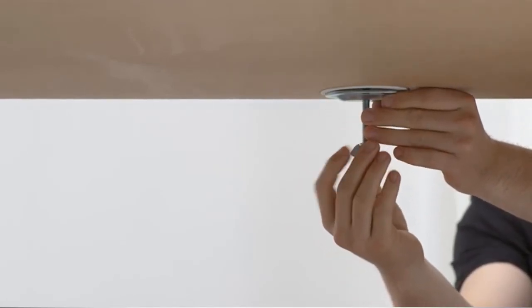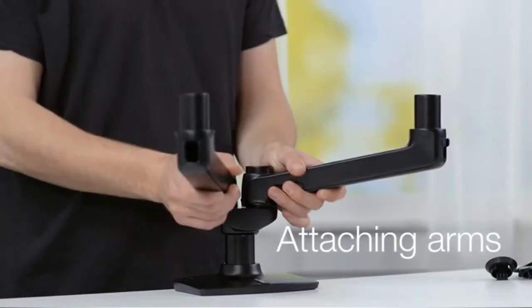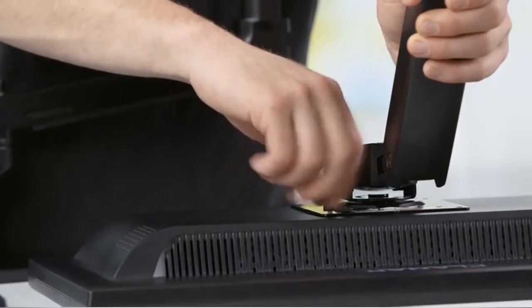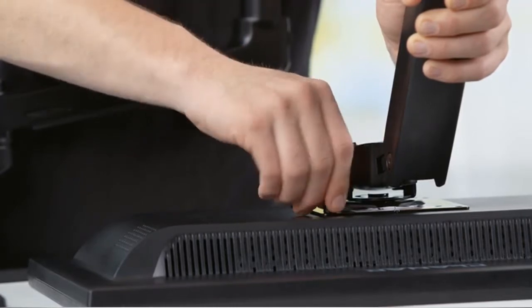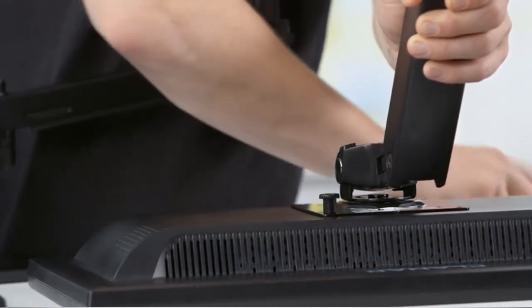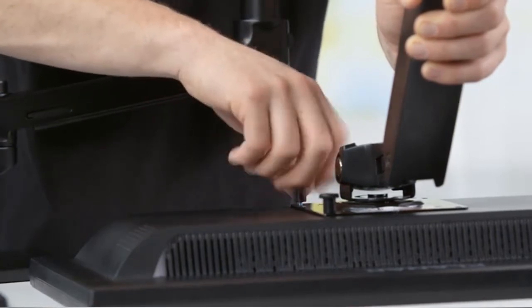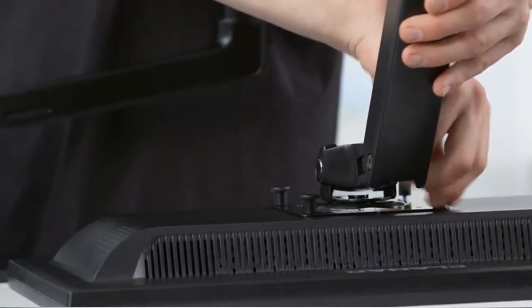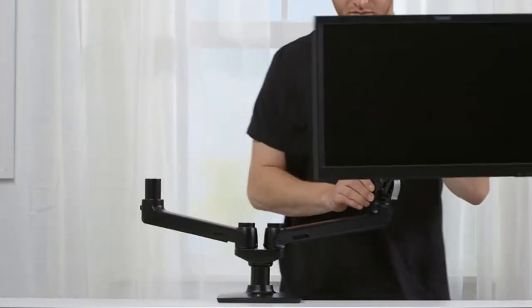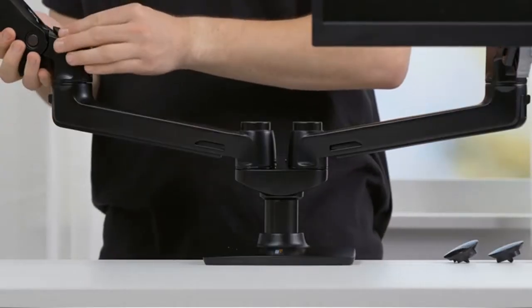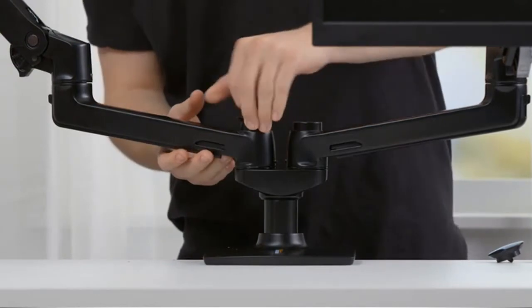Slide the lower arms onto the base. Attach one arm to the back of your monitor using the included screws. You can either tighten them with a Phillips screwdriver or use the included knobs and tighten by hand. Attach the second monitor to the arm following the same steps. Slide the upper arms over the lower arms, then insert the angled caps into the top of the upper arms. The cap should snap into place.